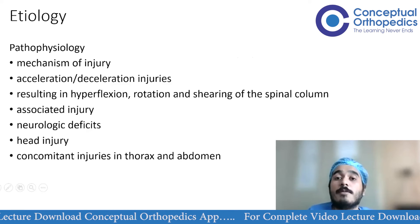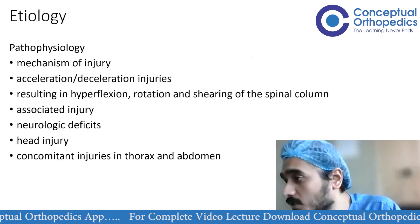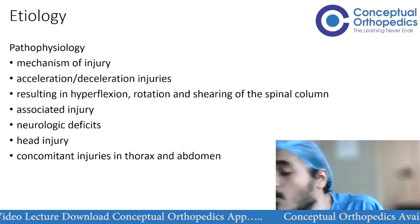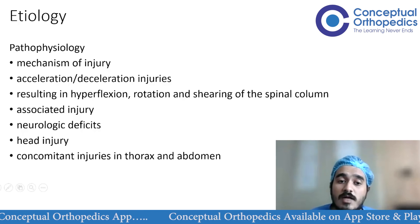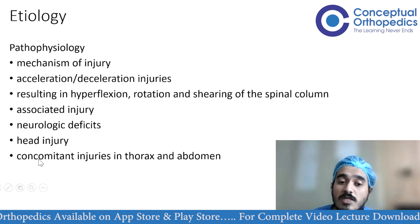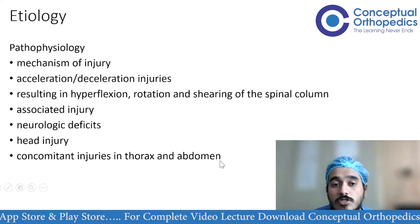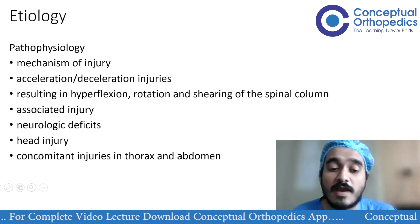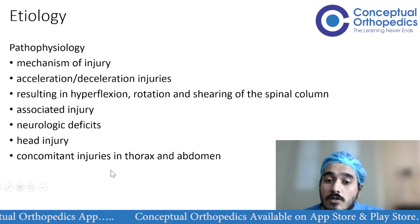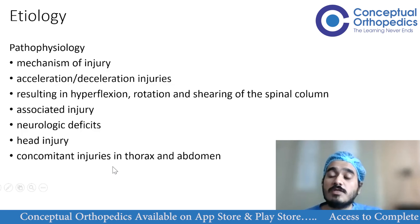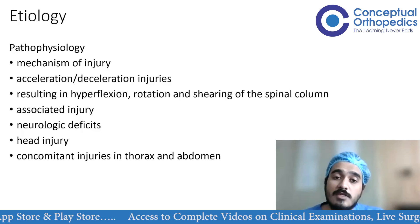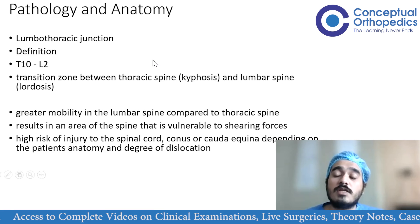As a person is seated, hyperflexion, rotation, and shearing occur together, producing a three-column injury with a rotational component. Associated injuries are common: neurological deficits are most frequent, along with head injuries and concomitant thoracic and abdominal injuries. It is critical to evaluate these patients in the emergency department immediately, as injuries at the dorsal or thoracic spine level often involve thoracic trauma requiring urgent ICD insertion for hemothorax.